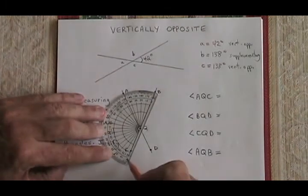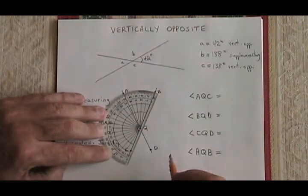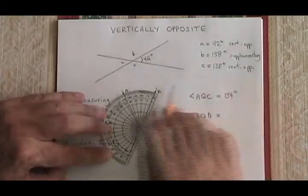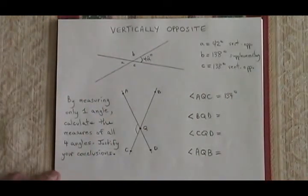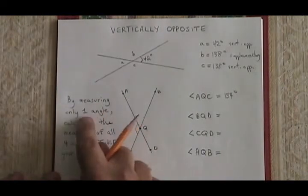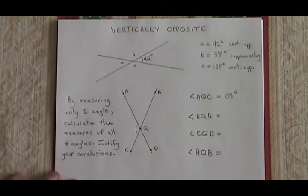Angle AQC is about 134 degrees. And I got that measurement by measuring directly with the protractor. And that is my only one angle that I'm allowed to measure by the conditions of the question.